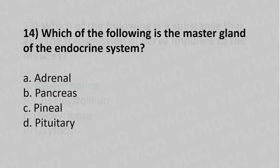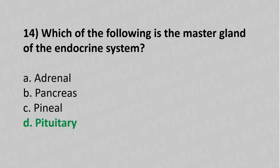Now let's move to question number fourteen: Which of the following is the master gland of the endocrine system? Option A: adrenal. Option B: pancreas. Option C: pineal. Option D: pituitary. The answer is Option D: pituitary.